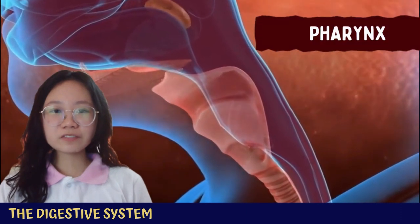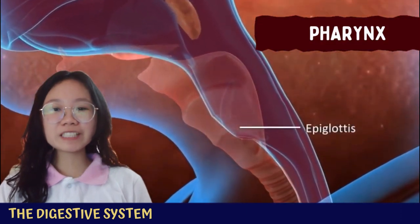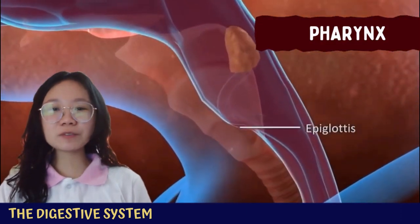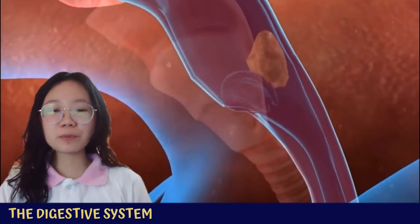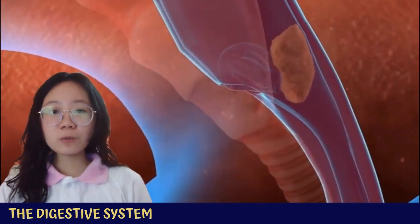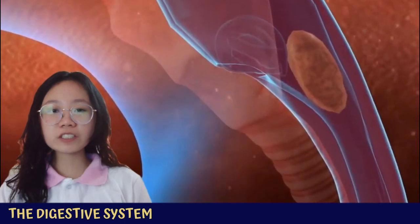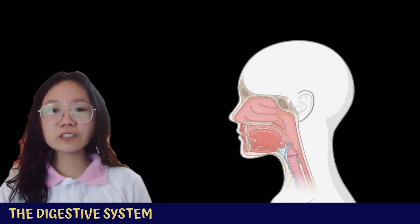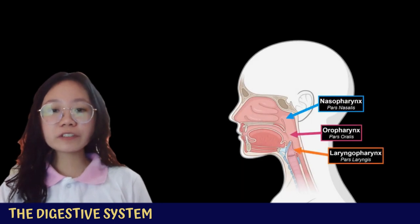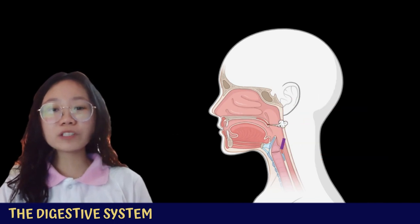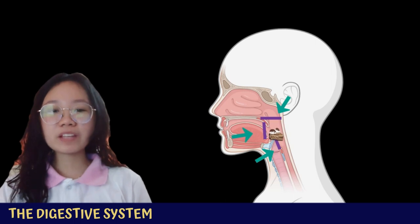The pharynx is a funnel-shaped tube about 15 centimeters long, extending from the base of the skull to the inferior border of the cricoid cartilage. Its function is to conduct food to the esophagus, particularly via the oral pharynx and laryngopharynx. The constrictor circular muscles of its outer layer aid in peristalsis, while the longitudinal muscles of its inner layer aid in swallowing.